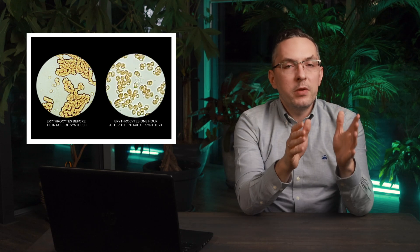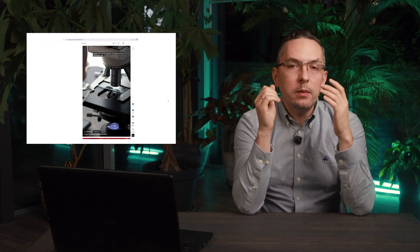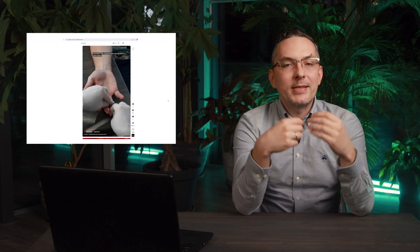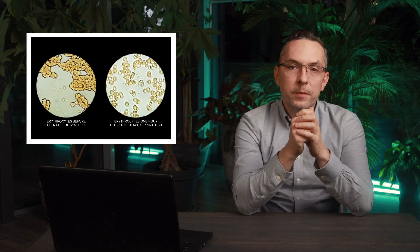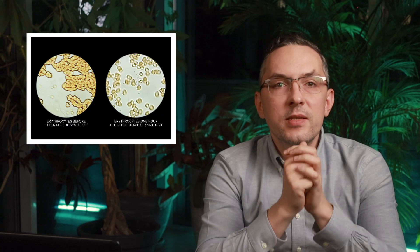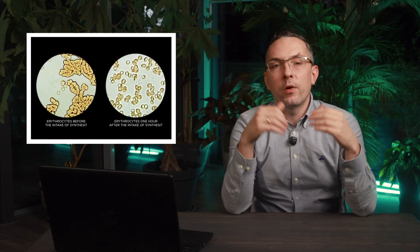I've repeated this experiment many times. I've taken blood from a lot of people myself and observed it under a microscope. In the left image, you can clearly see the cells clump together forming a dense sludge. Blood like this has a hard time moving through your capillaries. Often it doesn't even reach them.